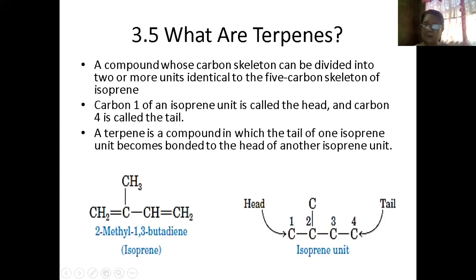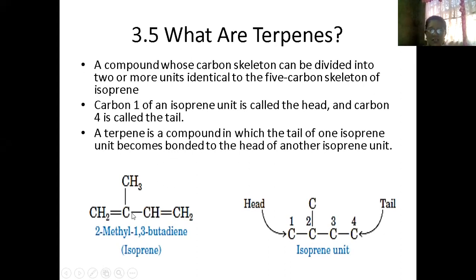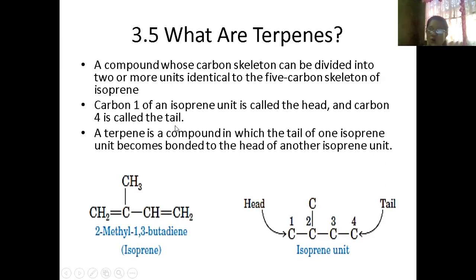How are we going to name the terpenes? Terpenes are two or more units identified with a five-carbon skeleton. That five-carbon skeleton is known as the isoprene unit. This is an isoprene unit — that's one, two, three, four, five carbons, with four continuous carbons. This is the head: carbon one. This is the tail: carbon four.